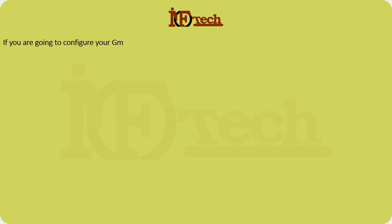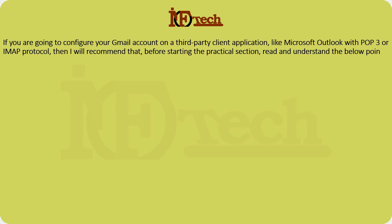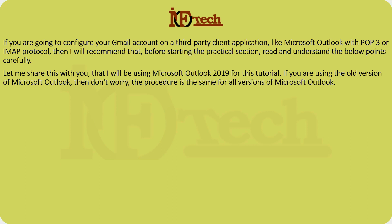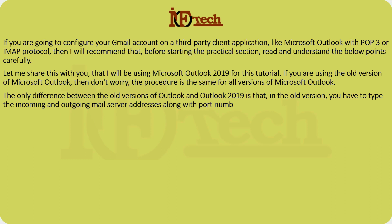If you are going to configure your Gmail account on a third-party client application like Microsoft Outlook with POP3 or IMAP protocol, then I recommend that before starting the practical section, read and understand the below points carefully. I will be using Microsoft Outlook 2019 for this tutorial. If you are using an older version of Microsoft Outlook, don't worry — the procedure is the same for all versions. The only difference is that in the old version you have to type the incoming and outgoing mail server addresses along with port numbers, protocol type, and credentials manually.